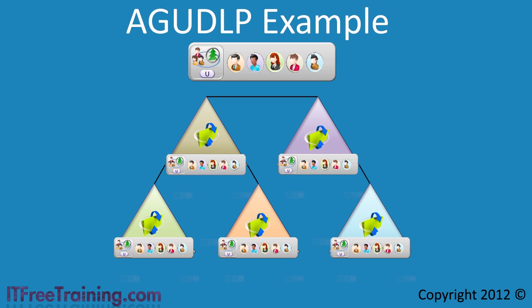Let's first consider administration. Having just one top sales group would require the administrator or administrators to have knowledge of all the sales people that need to be in that group. You could select one administrator in each domain to keep the group up to date, but the problem is that all administrators would have equal access — meaning they can all add and remove users from any domain into the universal group.